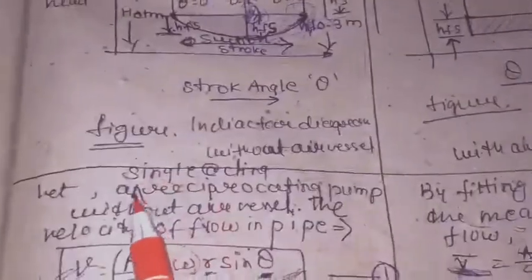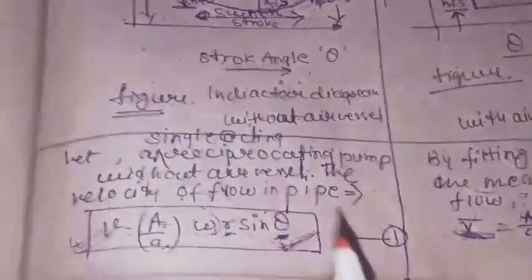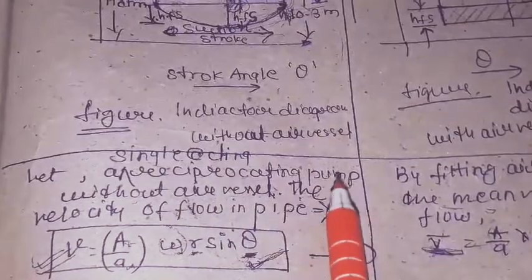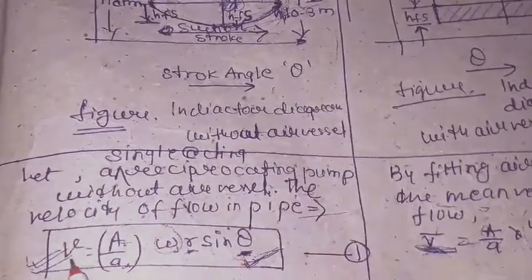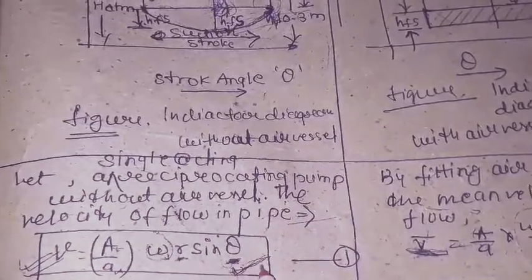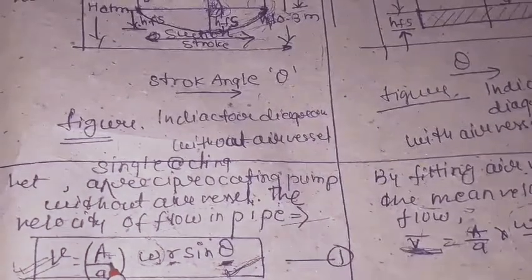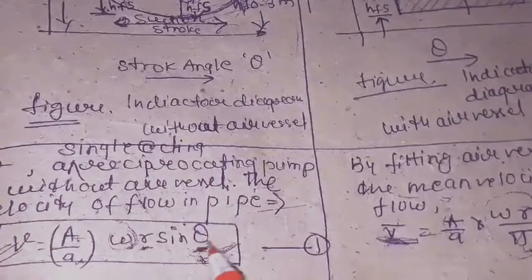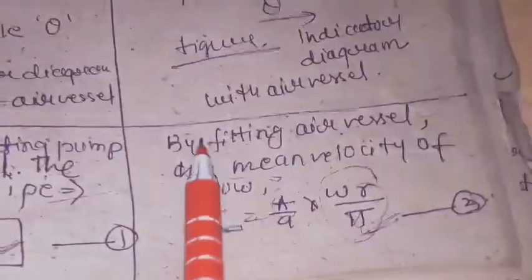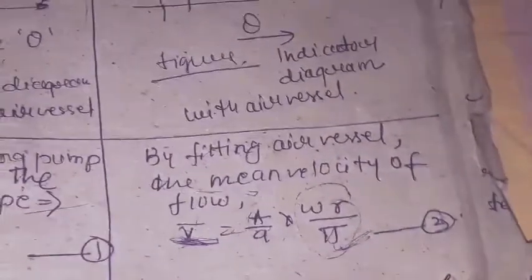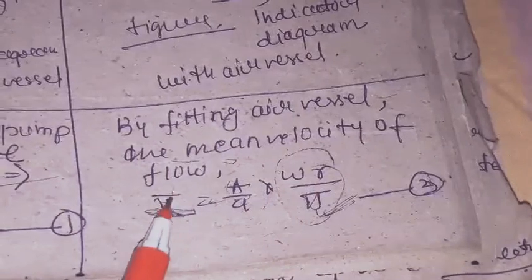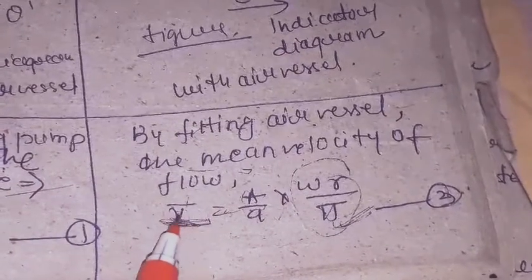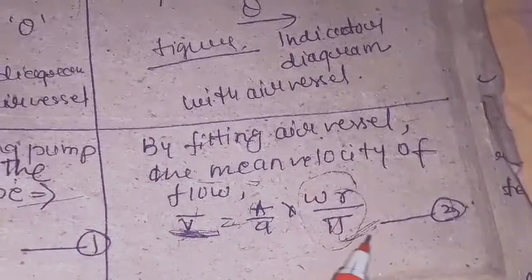For a single acting reciprocating pump when the air vessel is not used, the velocity of fluid inside the pipe is given by: v = (A/a) × ω × r × sin θ, where A is the cylinder area, a is the pipe area, ω is the speed of the pump, r is the crank radius, and θ is the stroke angle. When the air vessel is used, a uniform mean velocity takes place, given by: v̄ = (A/a) × ω × r / π.